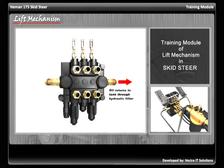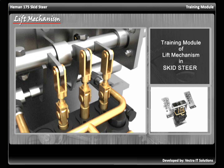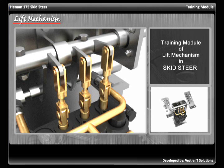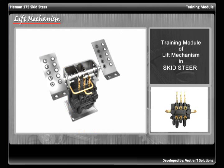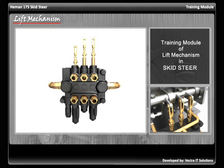The oil is sent towards the hydraulic filter, which cleans it of any foreign particles and sends it back to the oil tank. The flow of oil to the cylinders is controlled by these spools, which are activated by the operator through a set of mechanical connections. When the spool is in the downward position, the oil is pushed through the upper port. When the spool is in the upward position, the oil is pushed through the lower port.